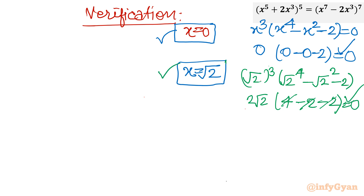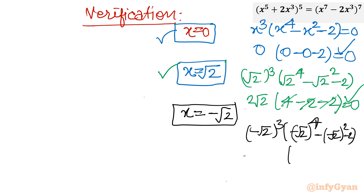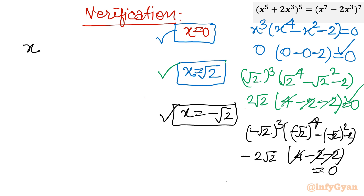Now checking x = -√2: (-√2)³ · ((-√2)⁴ - (-√2)² - 2) = -2√2 · (4 - 2 - 2) = -2√2 · 0 = 0. Since the even powers are the same as for +√2, the bracket again equals 0. So x = -√2 is also a true solution. Our final solutions are x = 0 and x = ±√2.